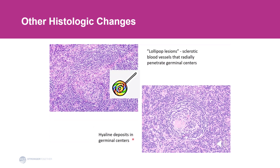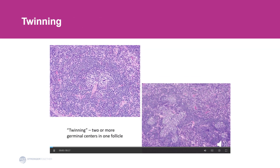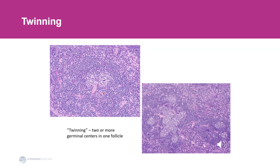In some cases, you can also see hyaline deposits — hyaline meaning pink — which is one of the other features of Castleman disease. Something also pretty characteristic is twinning, which is two or more germinal centers found in one follicle. Here we have two, and here we have multiple germinal centers which are conglomerated. Typically, you only have one germinal center in a normal lymph node.